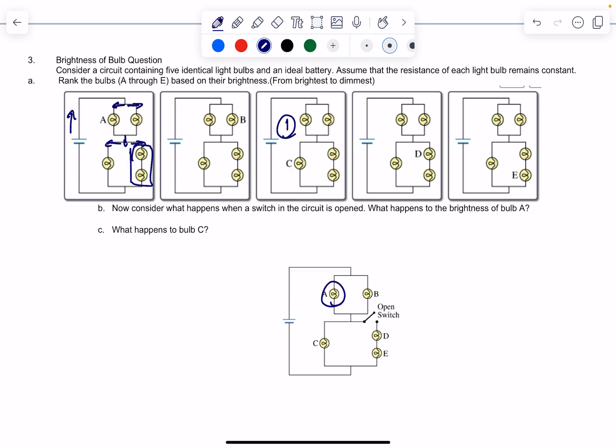So what's going to happen to bulb A when you open that switch? You're going to cause more electrons to flow through here. It's going to lose this option, but A and B are going to have the same current.